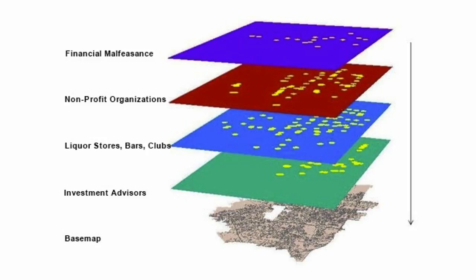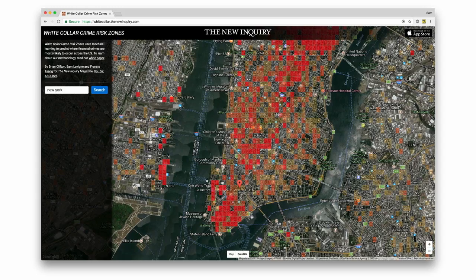Risk-terrain modeling generates a model by combining multiple features of a landscape correlated to risk. In our case, we used instances of financial malfeasance, density of non-profits, liquor stores, bars and clubs, and density of investment advisors.